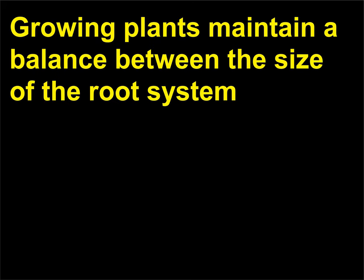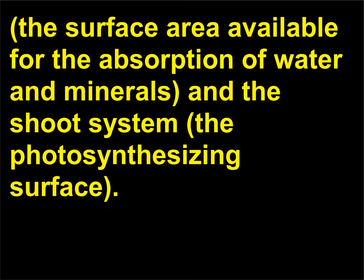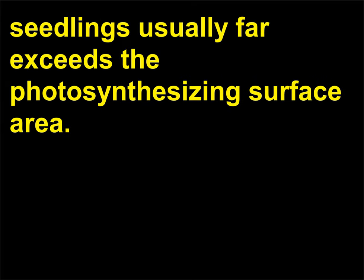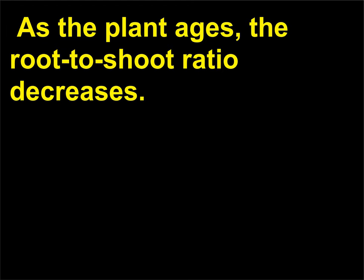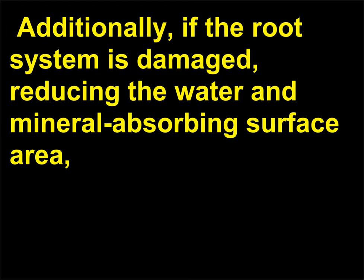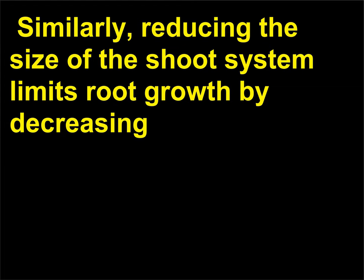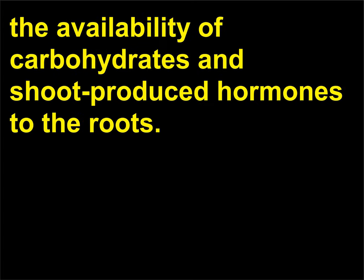Is there a relationship between the size of the root system and the size of the shoot system? Growing plants maintain a balance between the size of the root system — the surface area available for the absorption of water and minerals — and the shoot system, the photosynthesizing surface. The total water and mineral absorbing surface area in young seedlings usually far exceeds the photosynthesizing surface area. As the plant ages, the root-to-shoot ratio decreases. Additionally, if the root system is damaged, reducing the water and mineral absorbing surface area, shoot growth is reduced by lack of water, minerals, and root-produced hormones. Similarly, reducing the size of the shoot system limits root growth by decreasing the availability of carbohydrates and shoot-produced hormones to the roots.